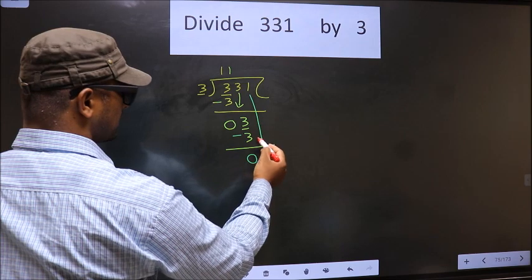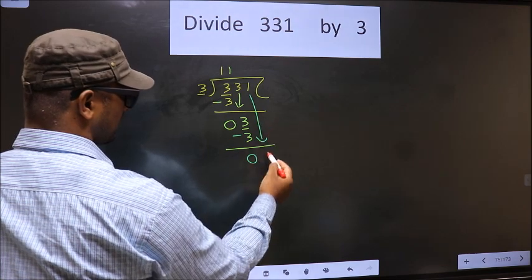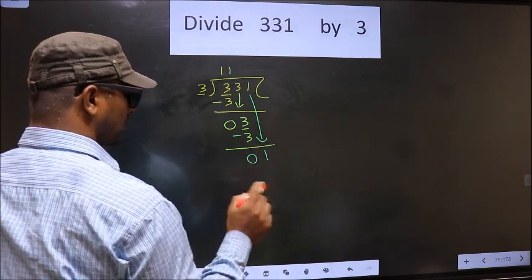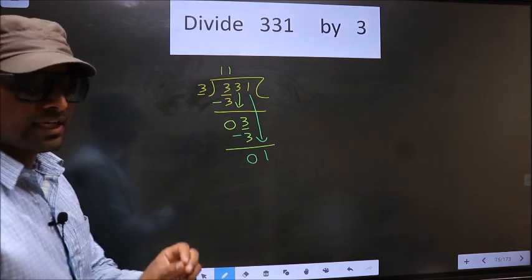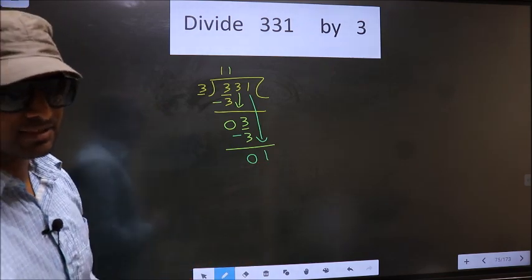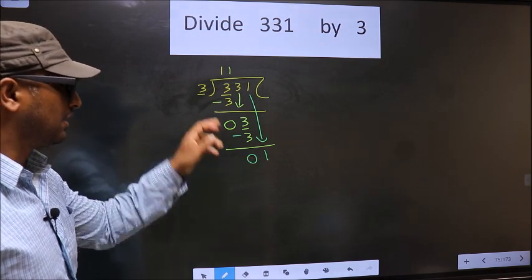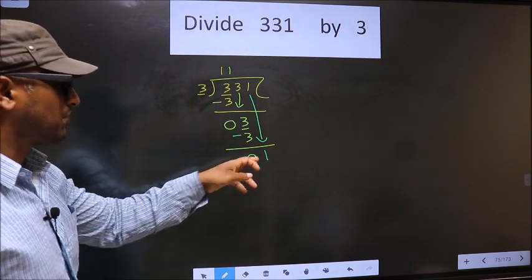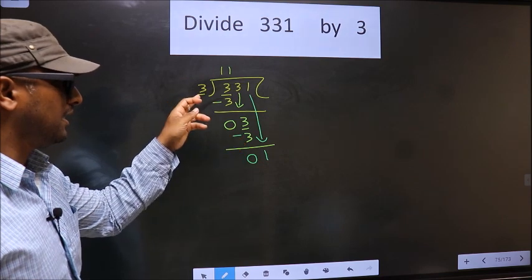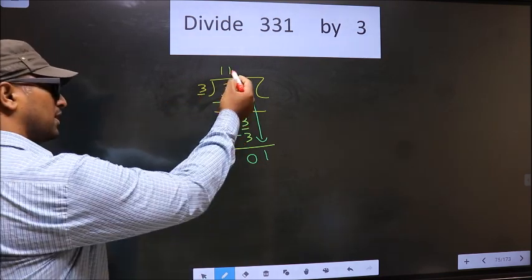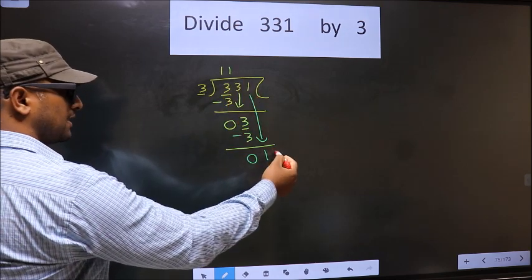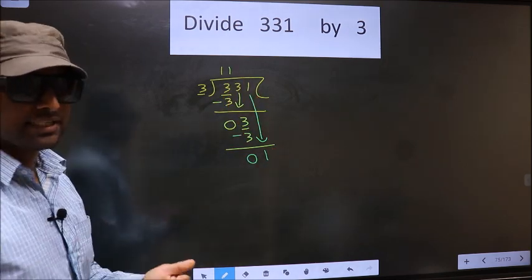Now you bring down the beside number, that is 1 down. Now here is where the mistake happens. And the mistake is this: here we have 1, here 3. 1 is smaller than 3. So what many do is they put a dot and take 0 here, which is wrong.